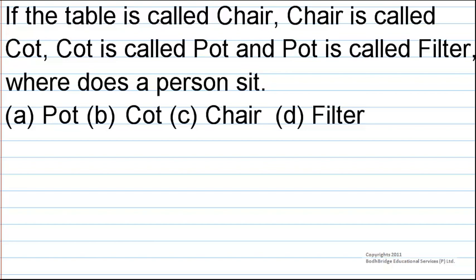If the table is called chair, chair is called cot, cot is called pot, and pot is called filter, where does a person sit? The options are: pot, cot, chair, and filter.